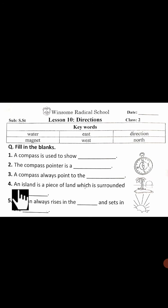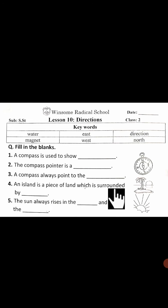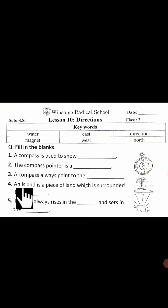Number four: An island is a piece of land which is surrounded by dash. Island, beta — island, surrounded...